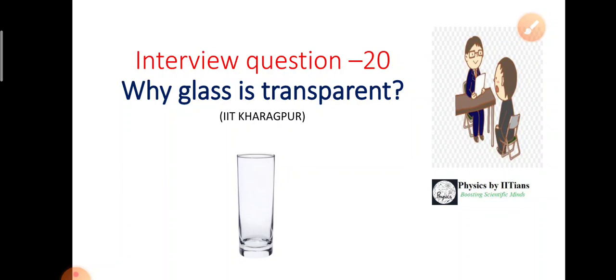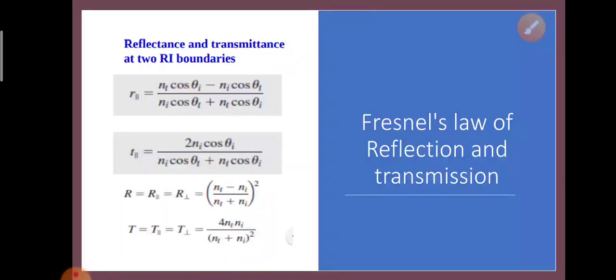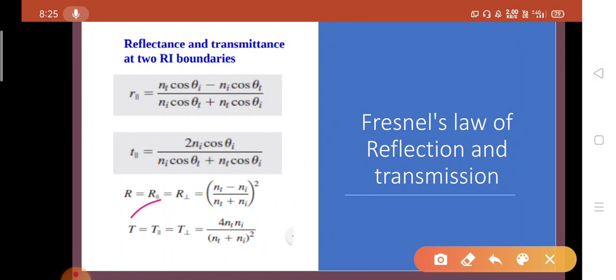We will understand in this video why glass is transparent. We all know Fresnel's laws for reflection and transmission, which decide how much light can be reflected at the boundary of two materials with different refractive indices and how much will be transmitted. Reflectance is given by (N_T − N_I)/(N_T + N_I) squared, and transmittance by 4·N_T·N_I/(N_T + N_I) squared, for normal incidence.